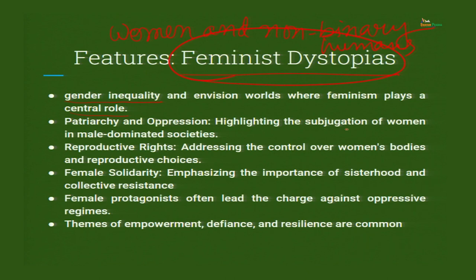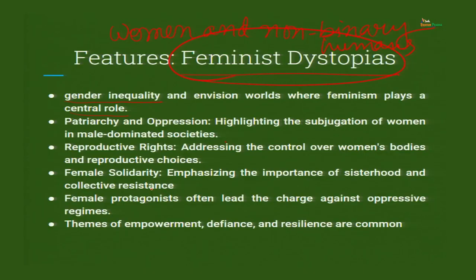Feminist dystopias will have feminist thought at their background. Patriarchy and oppression: highlighting the subjugation of women in male-dominated societies. Reproductive rights: addressing the control over women's bodies and reproductive choices — a woman should decide when to have a child, but suppose there is a society where the society itself decides whether it is the right time. Female solidarity: emphasizing the importance of sisterhood and collective resistance. This is something unheard of before in previous dystopias. Female protagonists often lead the charge against oppressive regimes.